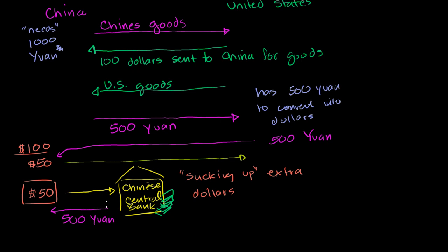They have to do this every time period — they have to actively participate in the market, printing yuan and buying dollars. They're doing it every day to maintain the peg. If the yuan is getting expensive, they actually maintain a range — they will buy dollars, so they're just accumulating more and more of these dollars.